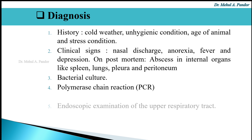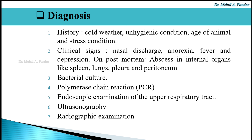For diagnosis, the history can be checked — whether it involves cold weather, unhygienic conditions, the age of the animal, and stress conditions. Clinical signs include nasal discharge, anorexia, fever, and depression. On post-mortem, abscesses in internal organs like the spleen, lungs, pleura, and peritoneum will confirm the presence of strangles.